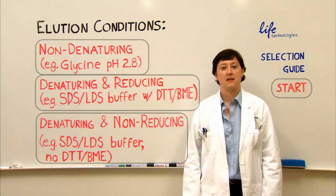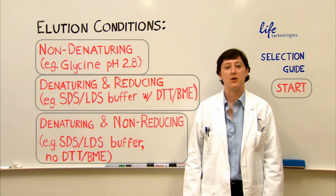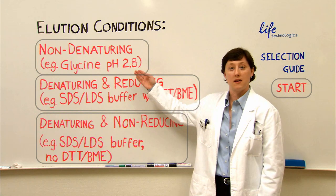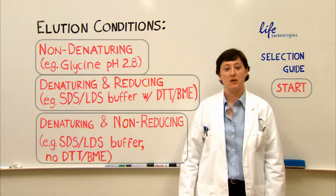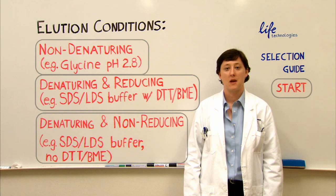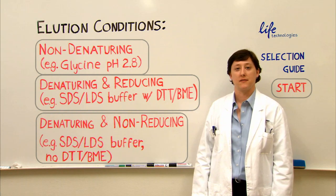Go ahead and select the elution conditions that best describe what you plan to do. Non-denaturing, denaturing and reducing conditions, or denaturing and non-reducing. Take a moment and make your selection. We're almost there.